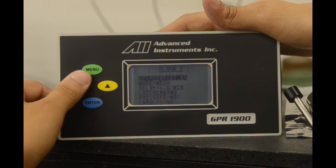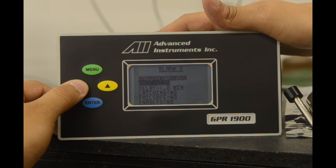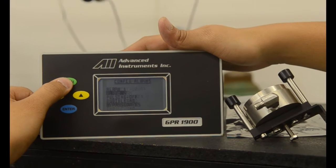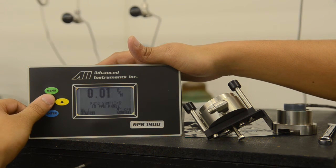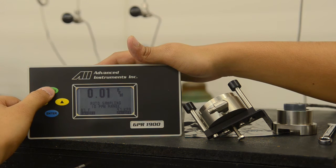We can configure alarm two in the same manner with the set point, mode, delay, latching, failsafe, and enabled options. We'll go back to the main menu and you can see the alarm values are set at the bottom of the screen.